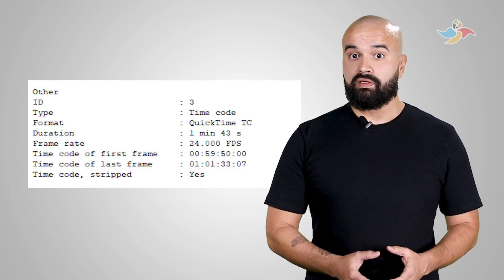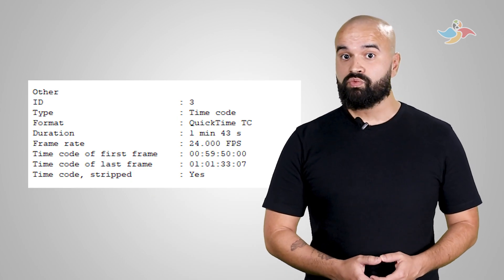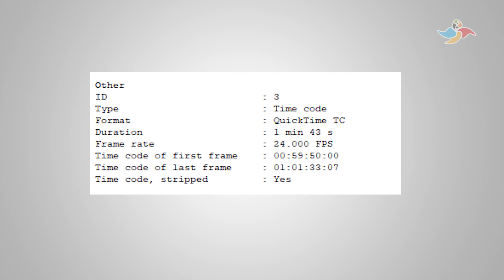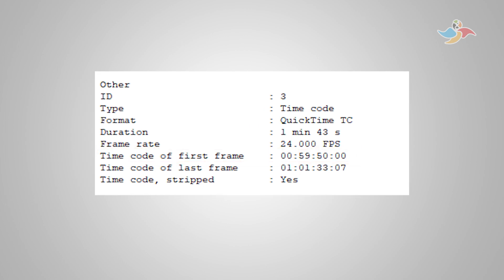It may be that your video comes with a metadata track with timecode information. In that case, EasyTitles will detect the starting timecode automatically and set it up for you. Otherwise, we set it up manually. Let's look at a few examples to get an idea of how that works in EasyTitles, and go over some best practices to make sure your subtitles are always synced up.